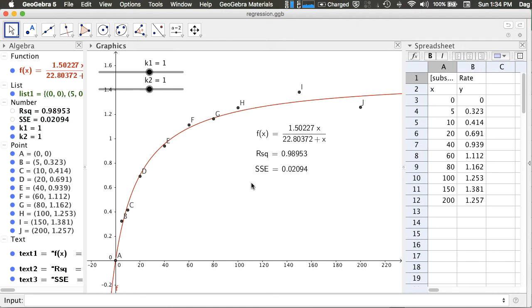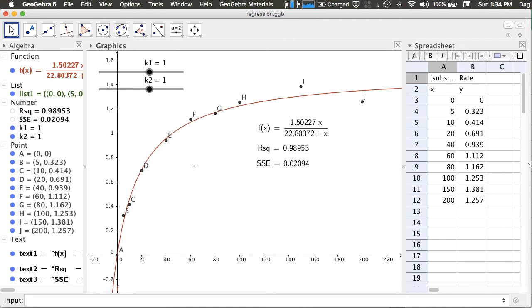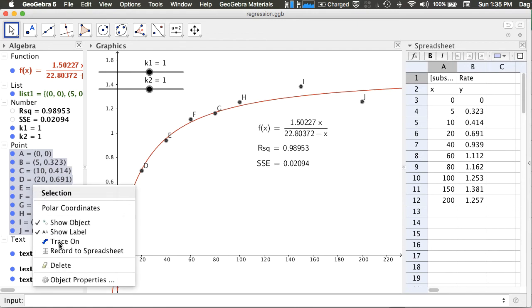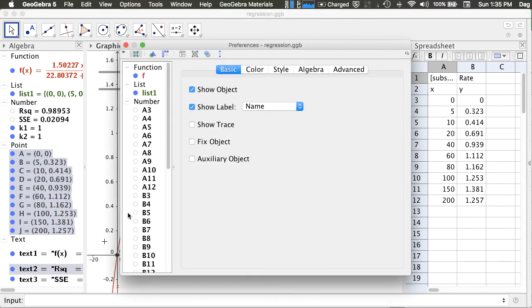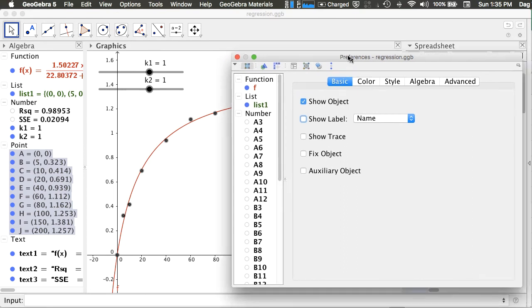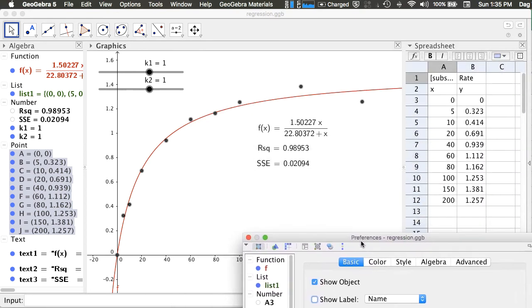Now you may also want to make your graph more beautiful. For example, I do not want to see the point labels A, B, C, D, E, F, G, H. So I select these points from the algebra panel. I click on them. Choose the object properties. Uncheck show label. And you can see the labels have been removed.